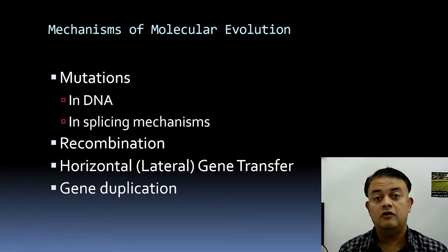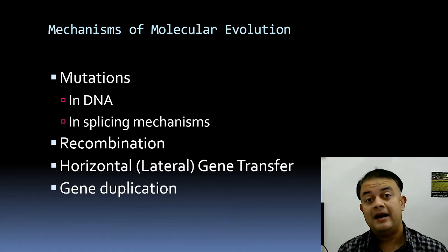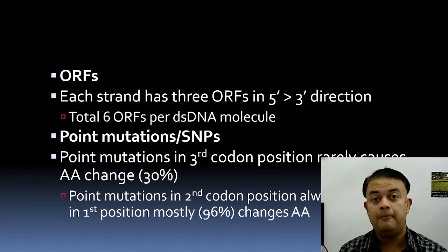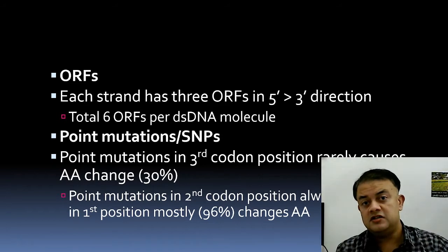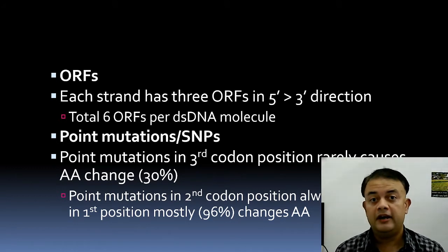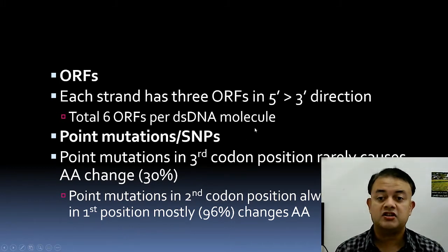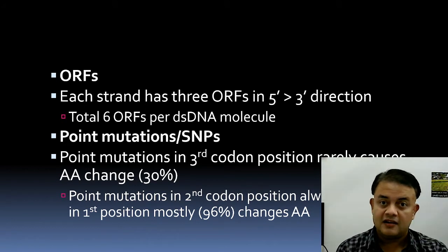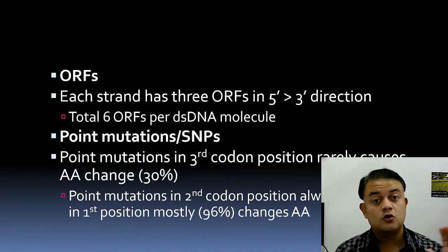Gene duplication is another mechanism of molecular evolution, also known as paralogy. Open reading frames (ORFs) also play a crucial role: if an indel (insertion or deletion) occurs, it has huge ramifications for many genes. Each DNA strand has three ORFs in the 5' to 3' direction — the reason being the triplet codon structure.